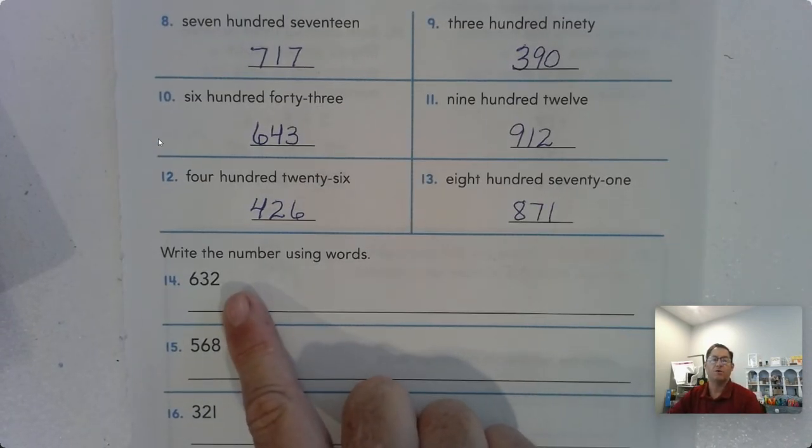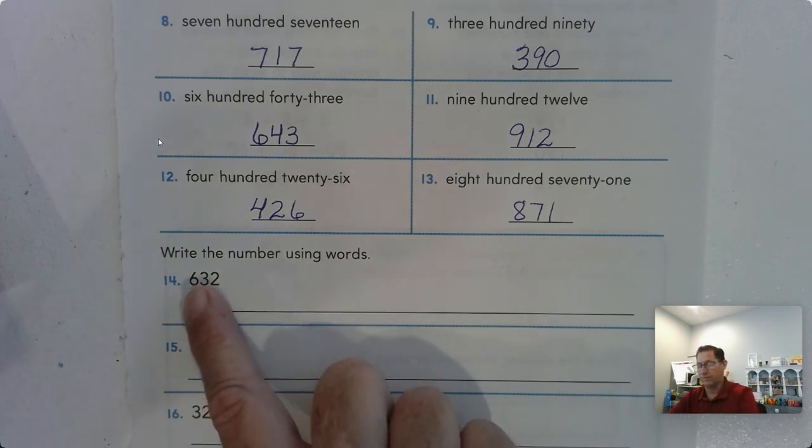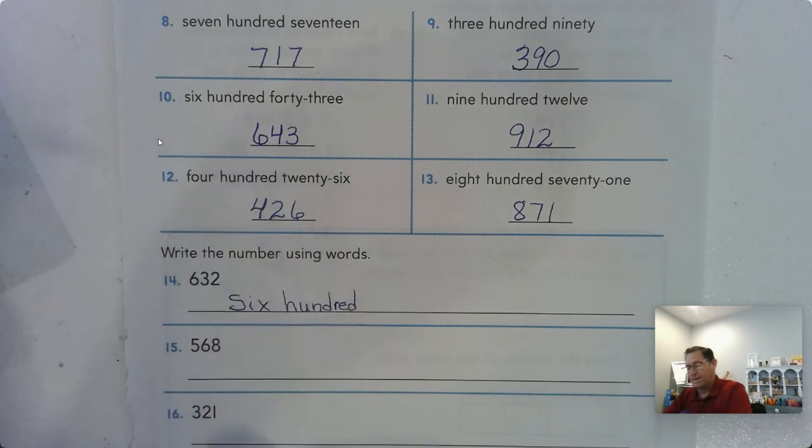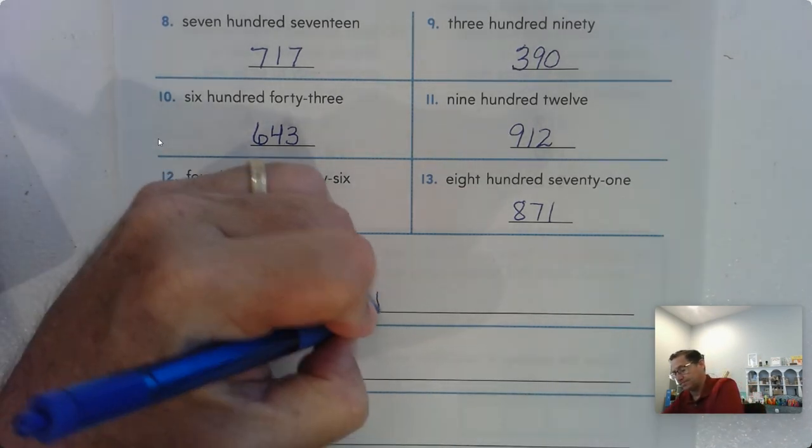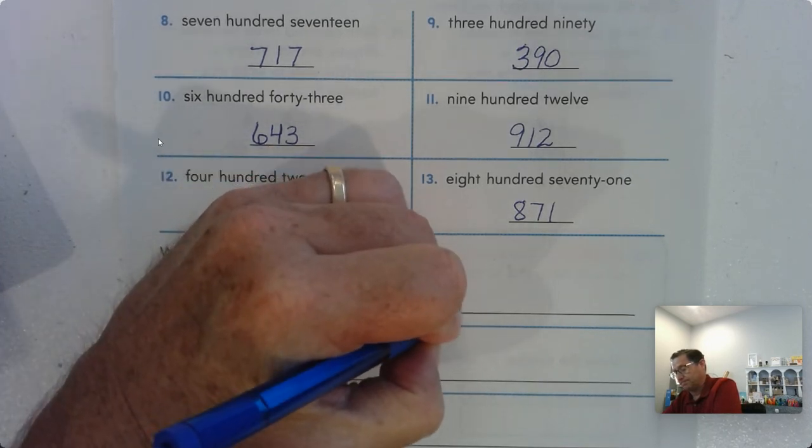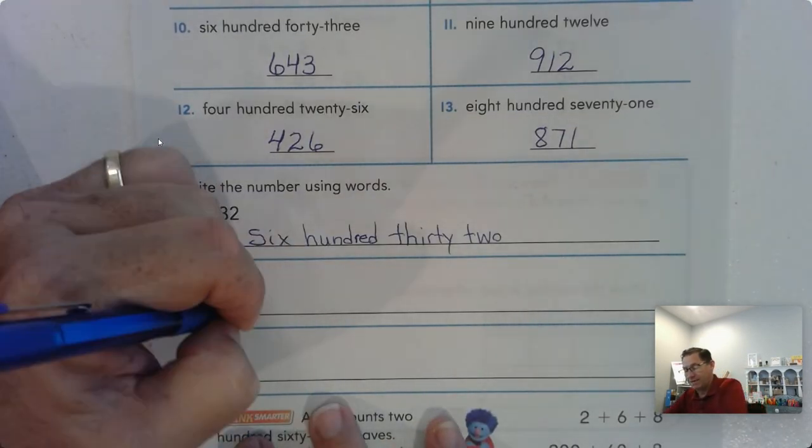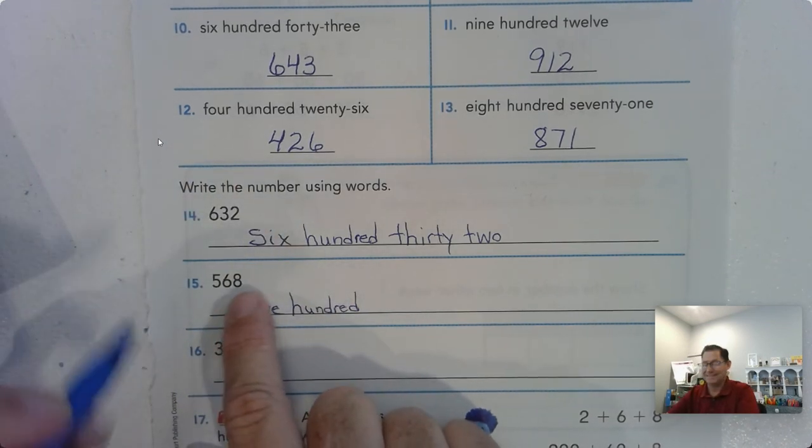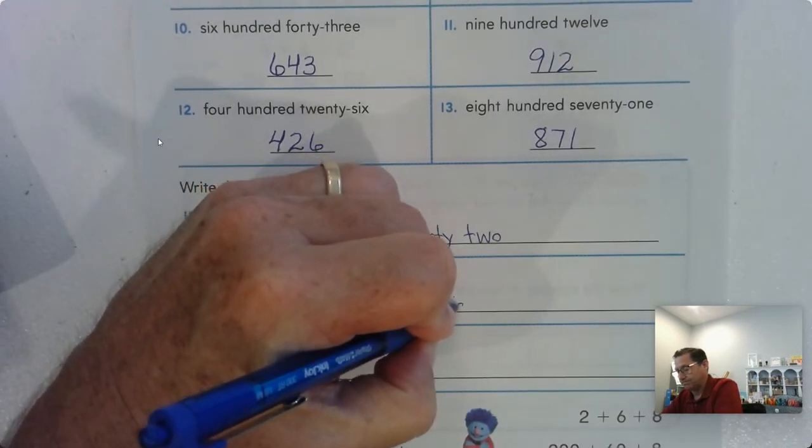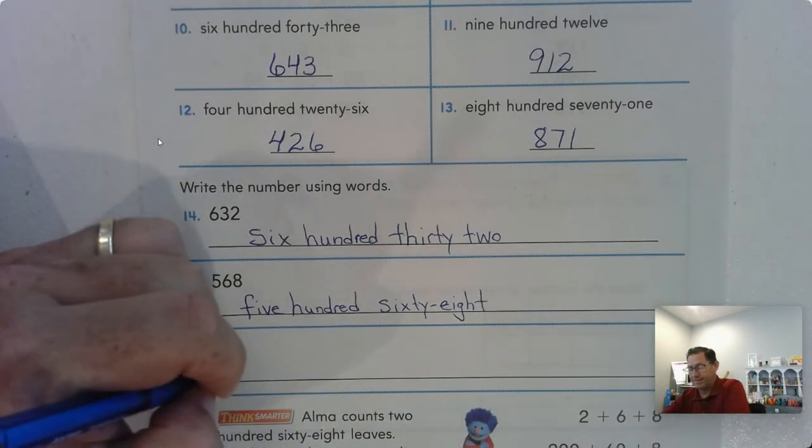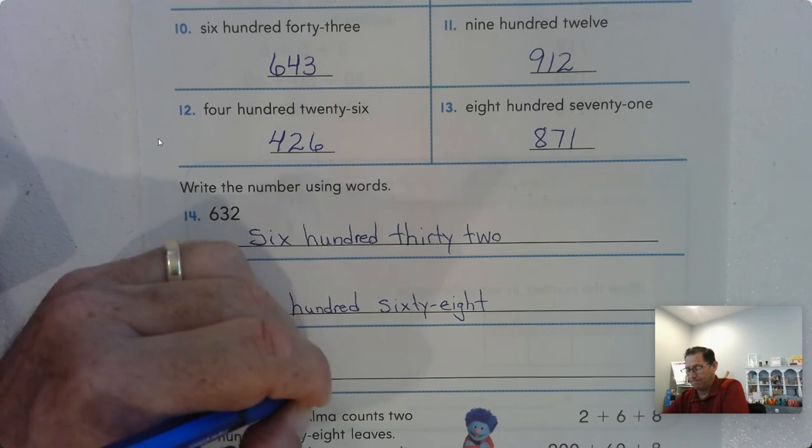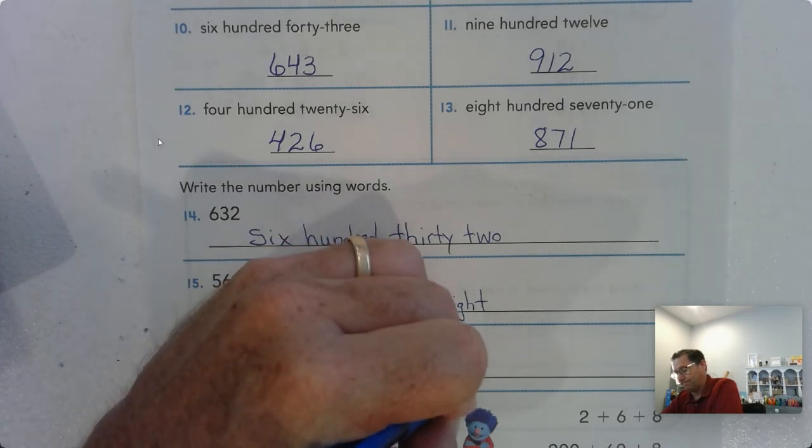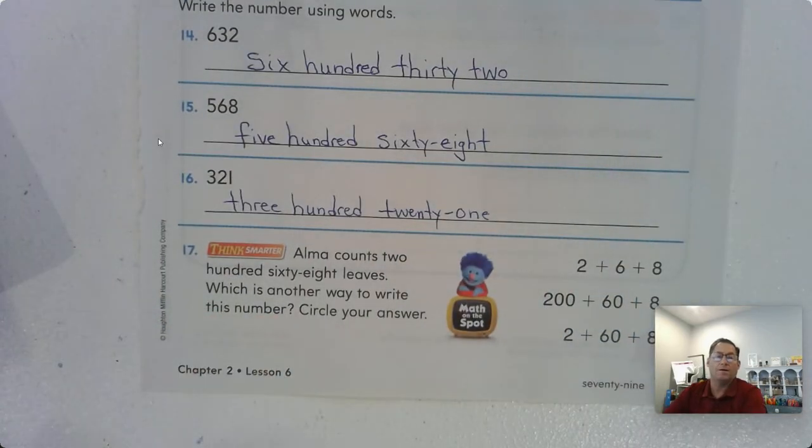Now we're going to take the three-digit number and write it using words. Let's start with the number in the hundreds place. We have 600 and read the ones and the tens together, 32. 500. Look at the tens and the ones, 38. 321. Let's look at 17, Thinking Smarter.